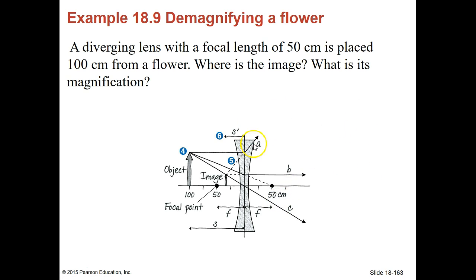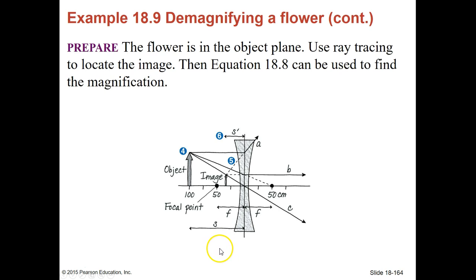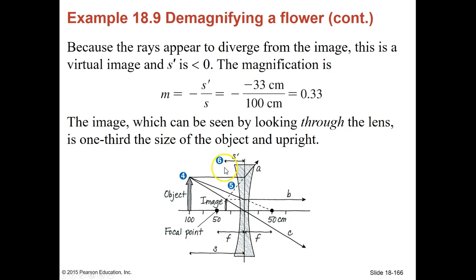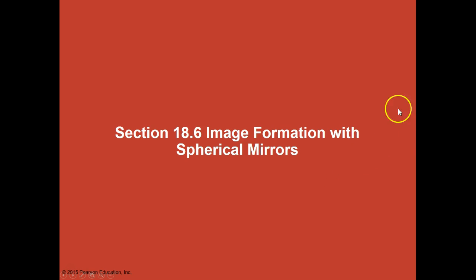This last problem is called demagnifying a flower. A diverging lens with a focal length of 50 centimeters is placed 100 centimeters from a flower — where is the image, and what is the magnification? The flower is in the object plane; we use ray tracing to locate the image, and we see that it is upright and reduced in size. To find the magnification, we do negative the distance to the image over the distance to the object. Because the image is on the same side, it's negative, giving a double negative — which is positive — meaning it's upright. Because it's less than one, the object appears one-third of the size, and that is the end of the section.